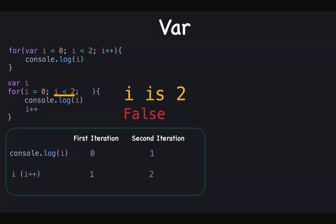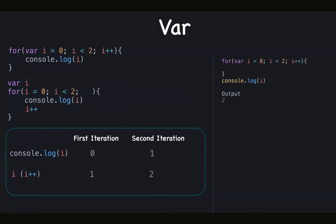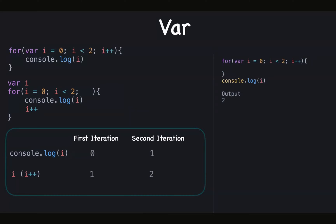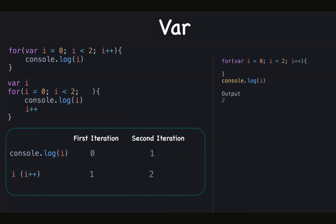So the output of this loop is zero and one. If you put a console.log after the for loop, it will give two as output, because var is hoisted and it's not block-scoped.